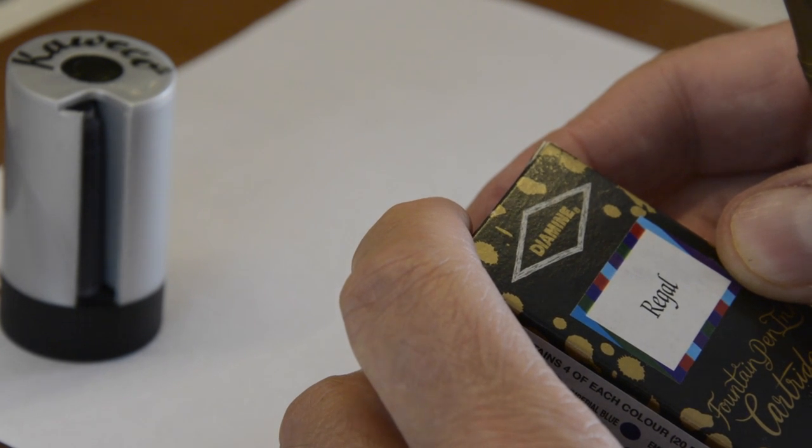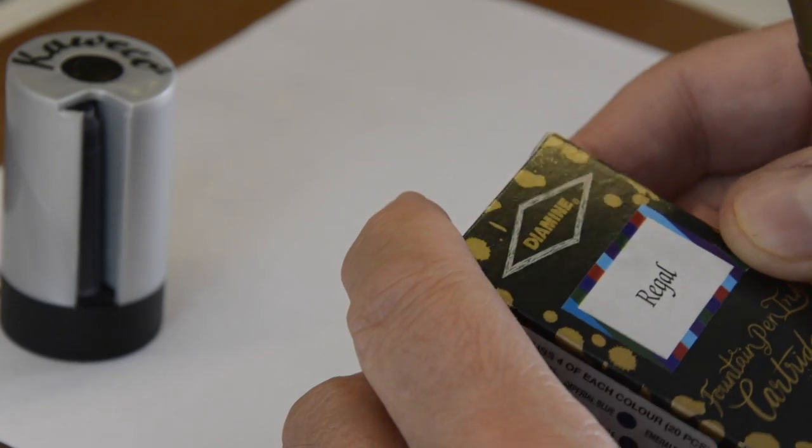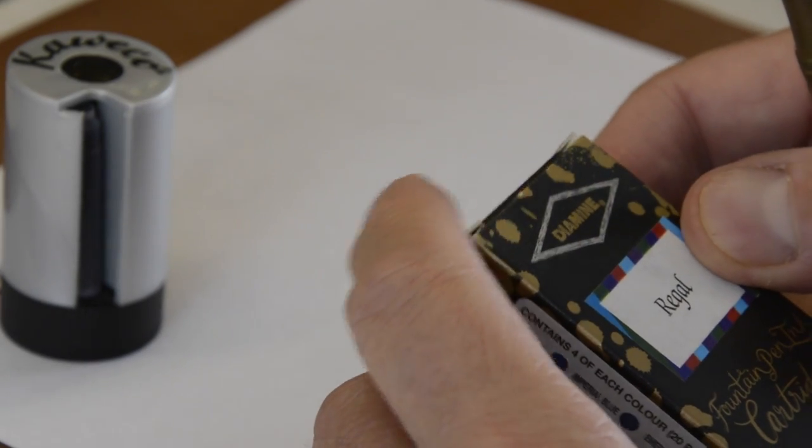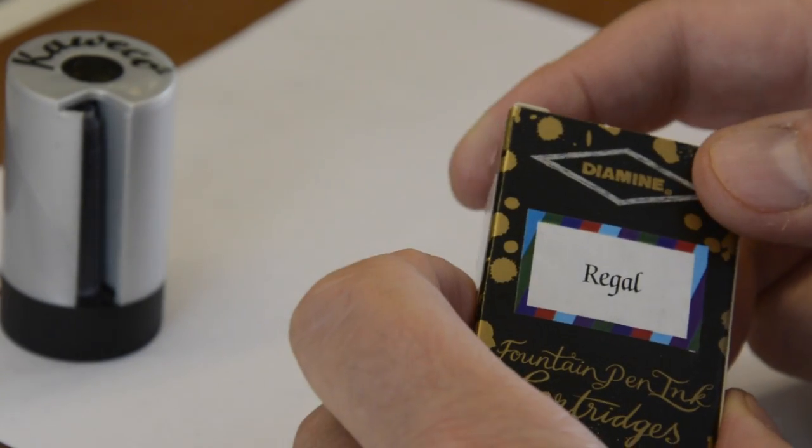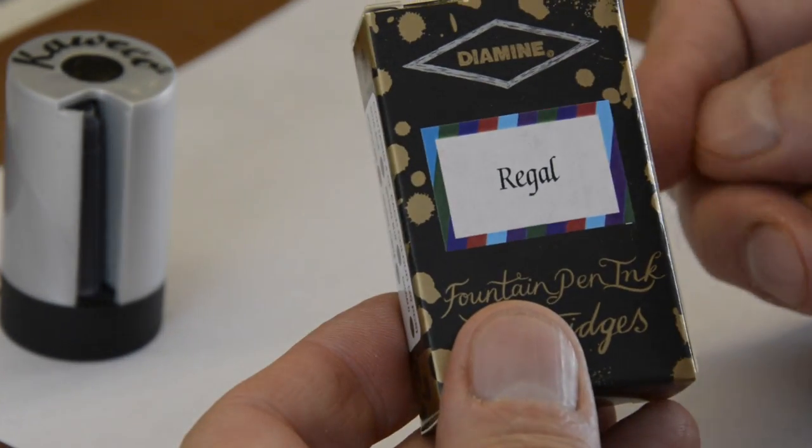I'll use one cartridge. When it runs out, I'll go into another one. That way, I have a sort of gauge of how much writing I've been doing and when the notes I took were actually taken. These I got from Cult Pens.